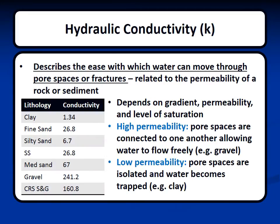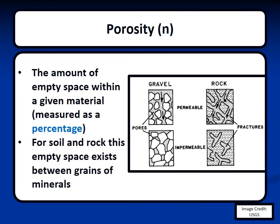Hydraulic conductivity describes the ease with which water can move through pore spaces or fractures. It's related to the permeability of a rock or sediment, and also depends on gradient, permeability, and level of saturation. High permeability means pore spaces are connected, allowing water to flow freely — a good example is gravel. Low permeability means pore spaces are isolated and water becomes trapped — a good example is clay. On the left, you can see a table of soil types and their conductivities. Porosity is the amount of empty space within a given material, measured as a percentage. For soil and rock, this empty space exists between grains of minerals, as shown in the diagram.